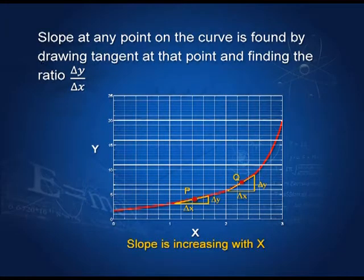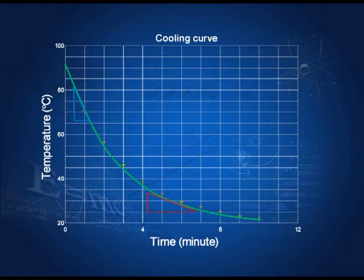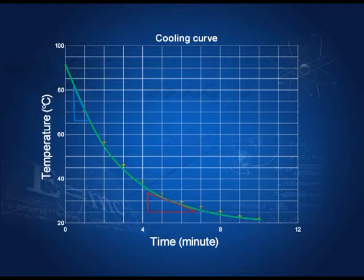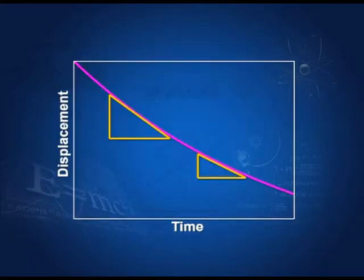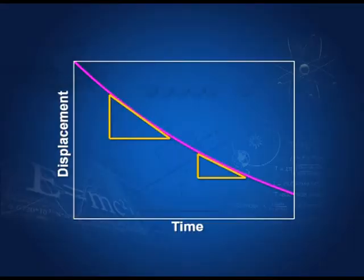Here I show you another graph where the slope is negative, but its magnitude is decreasing as time increases. This larger slope here becomes smaller here. So as time progresses, the magnitude of the slope decreases. Using this in another displacement-time graph where displacement is decreasing with time along a curve: the slope at this point is larger than at this point, meaning as time increases the magnitude of the slope is decreasing. That is, the velocity of the object is decreasing as time increases.